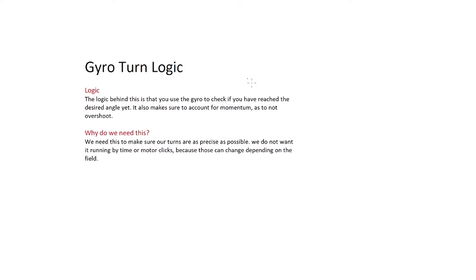We want your turn to be precise, but having it run on time or motor encoder clicks can vary depending on what field or robot you have. If you use your gyro, it'll be much more consistent, as degrees won't change. The logic behind this is that you use a gyro and a loop to check every single time if the gyro sees your desired angle. This turn will also account for momentum, so if it's going at a high speed, it will not overshoot.